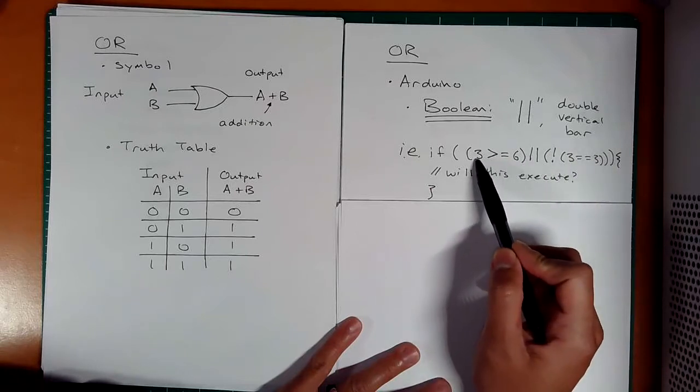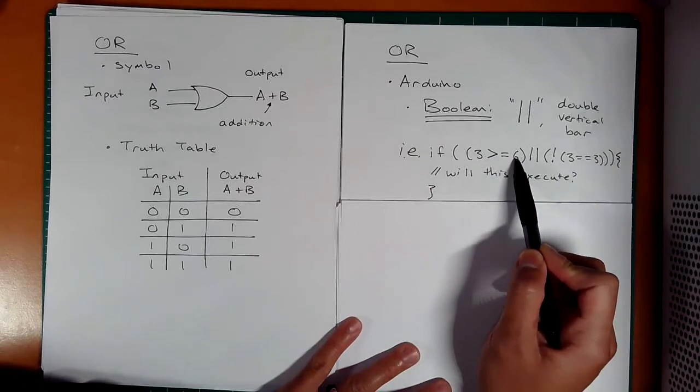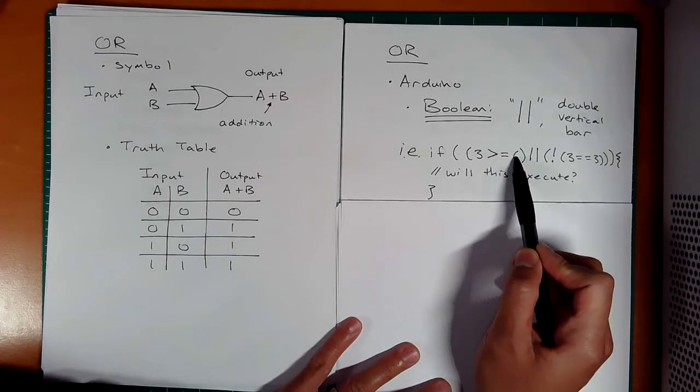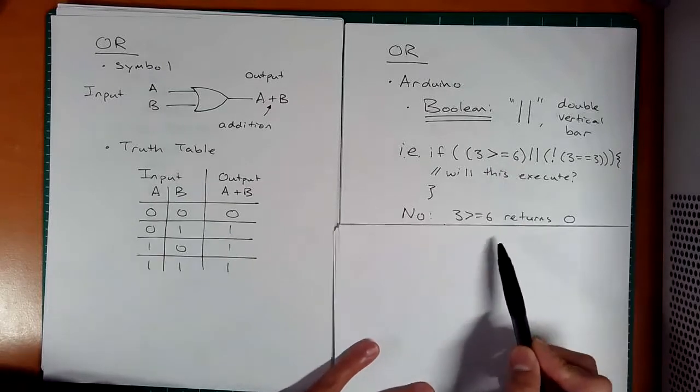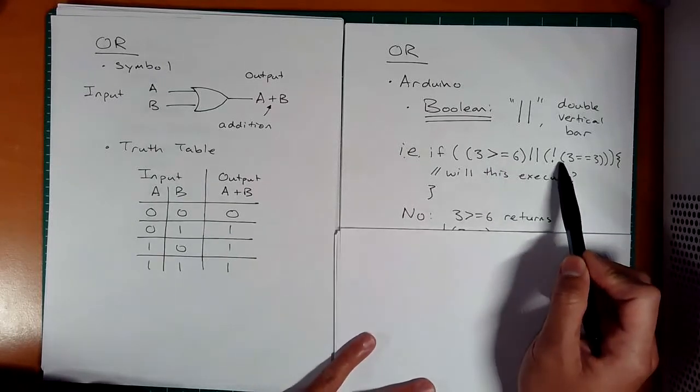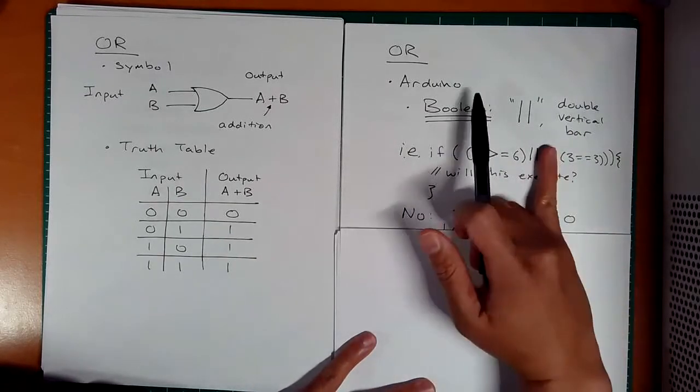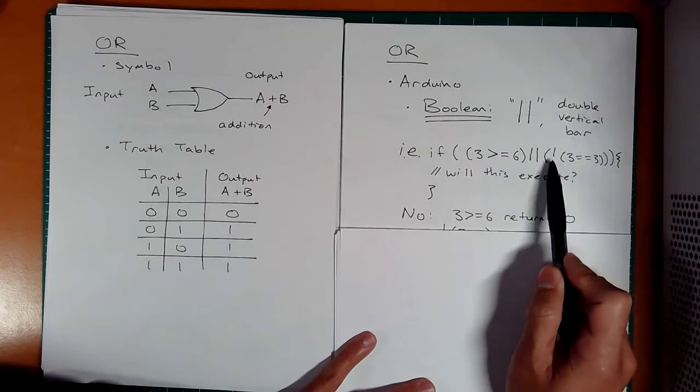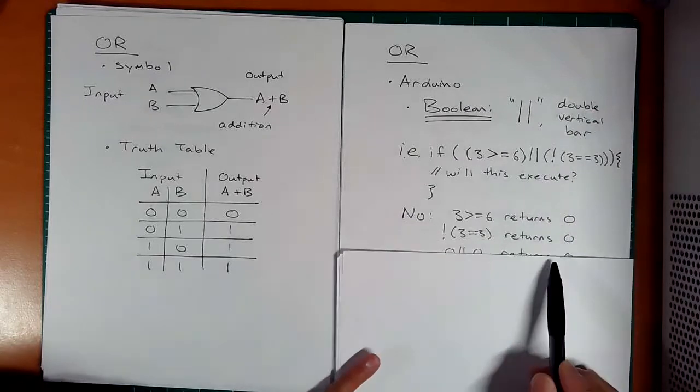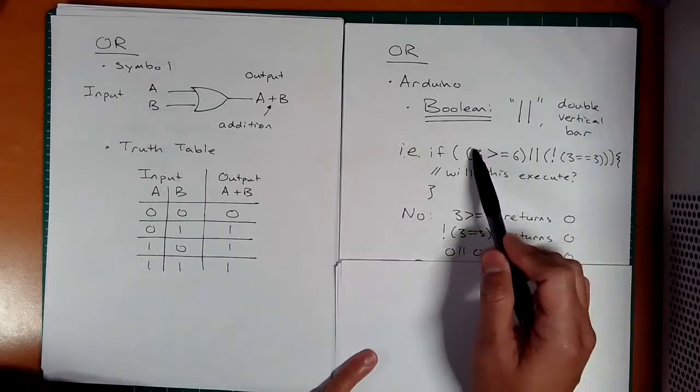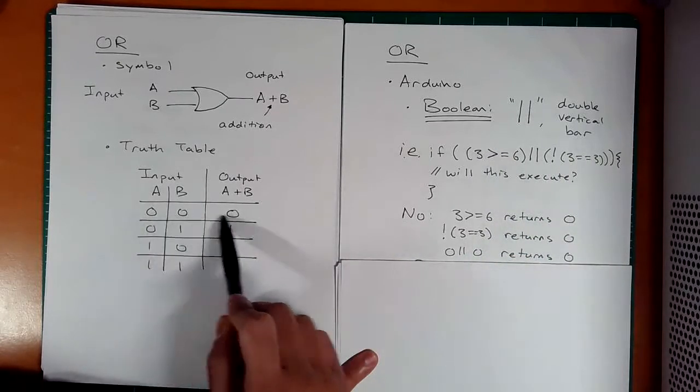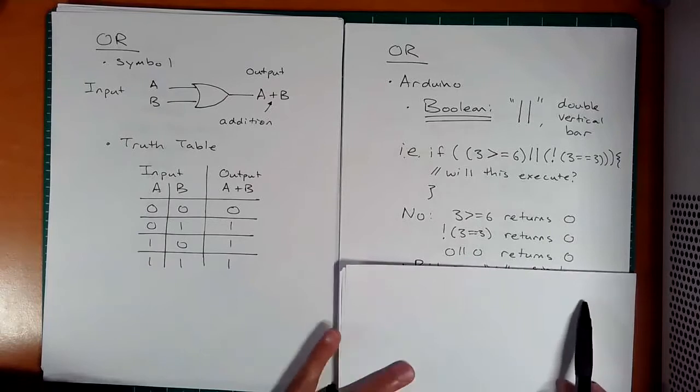We have an OR here with two questions on the left and right. Is 3 greater than or equal to 6? No, 3 is not greater than or equal to 6, so we have a 0 on the left side. What about this? First we operate on this like PEMDAS. Does 3 equal 3? Yes, that's a 1. But then not 1 is 0. So both of these were 0, 0 and 0. This OR would return 0 because we're hitting the first column here.